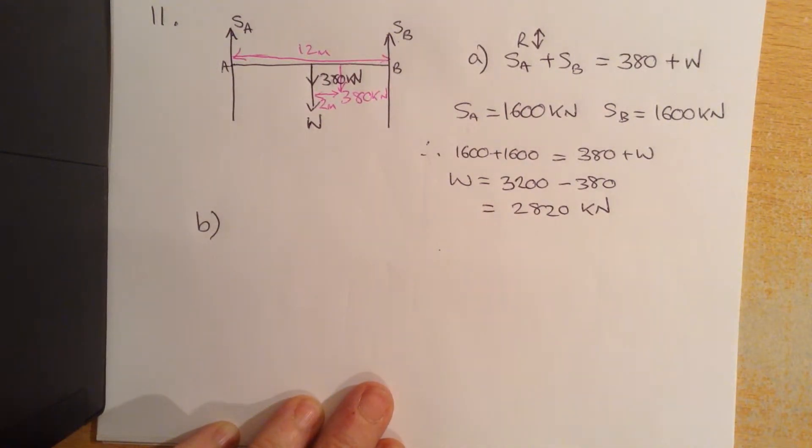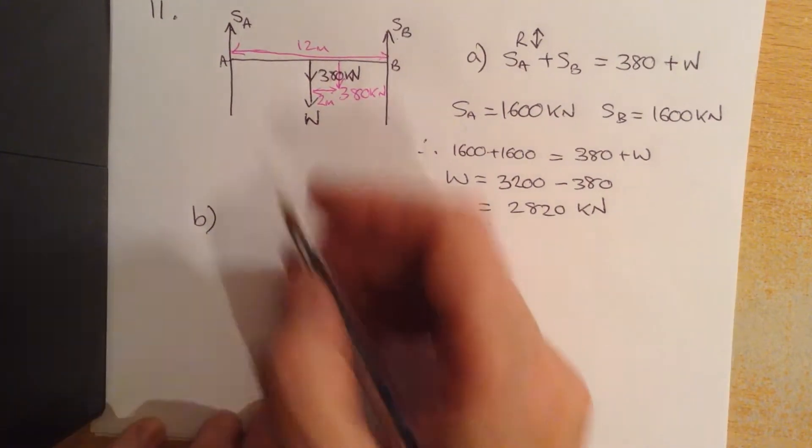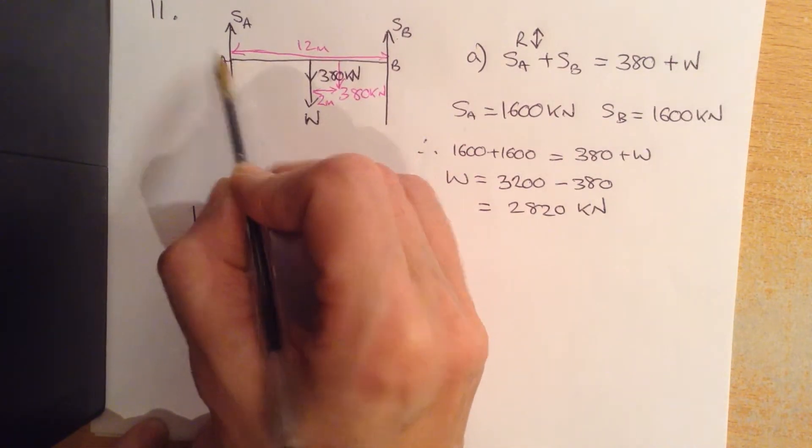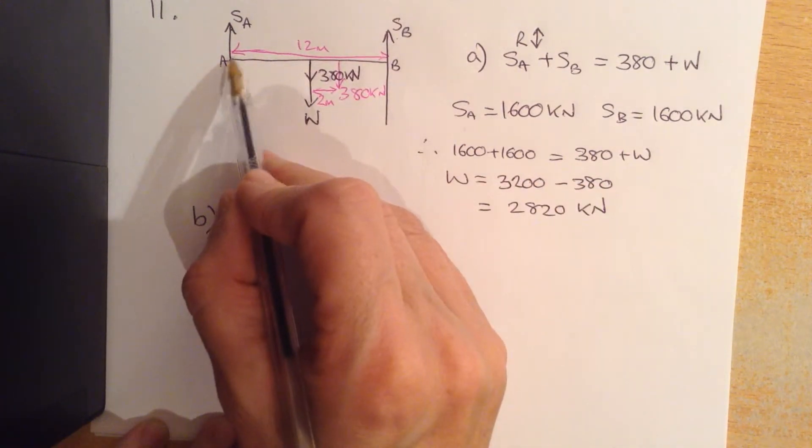Now sketch the free body diagram and calculate the force on each pillar. Well, I'm going to take moments around A. I could pick anywhere on the pillar but I'm going to choose A